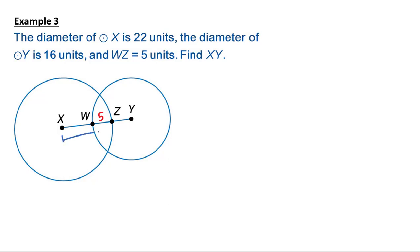This whole length here, the diameter of circle X is 22. So that length is 11, leaving me 6 here, because 11 minus 5. The diameter of circle Y is 16. So that segment length is 8. 8 minus 5 is 3. So I have 6 plus 5 plus 3, that equals 14 units long.